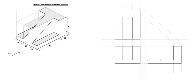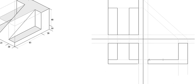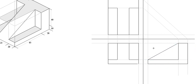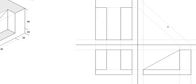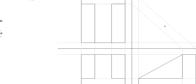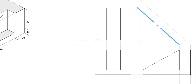Now you want to draw the slanting edge. Just take a dark pencil — HB or preferably 2H — and join this point to the top. And you are going to have your object in third angle orthographic projection. Thank you for watching. Please remember to like, subscribe to the channel, and share the video.